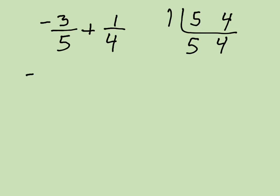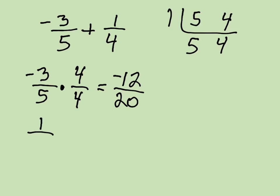And so then we have negative 3 fifths. We're going to multiply that by 1 in the form of 4 over 4. So that becomes negative 12 over 20. And then we're going to have 1 fourth, and we're going to multiply that by 5 over 5.